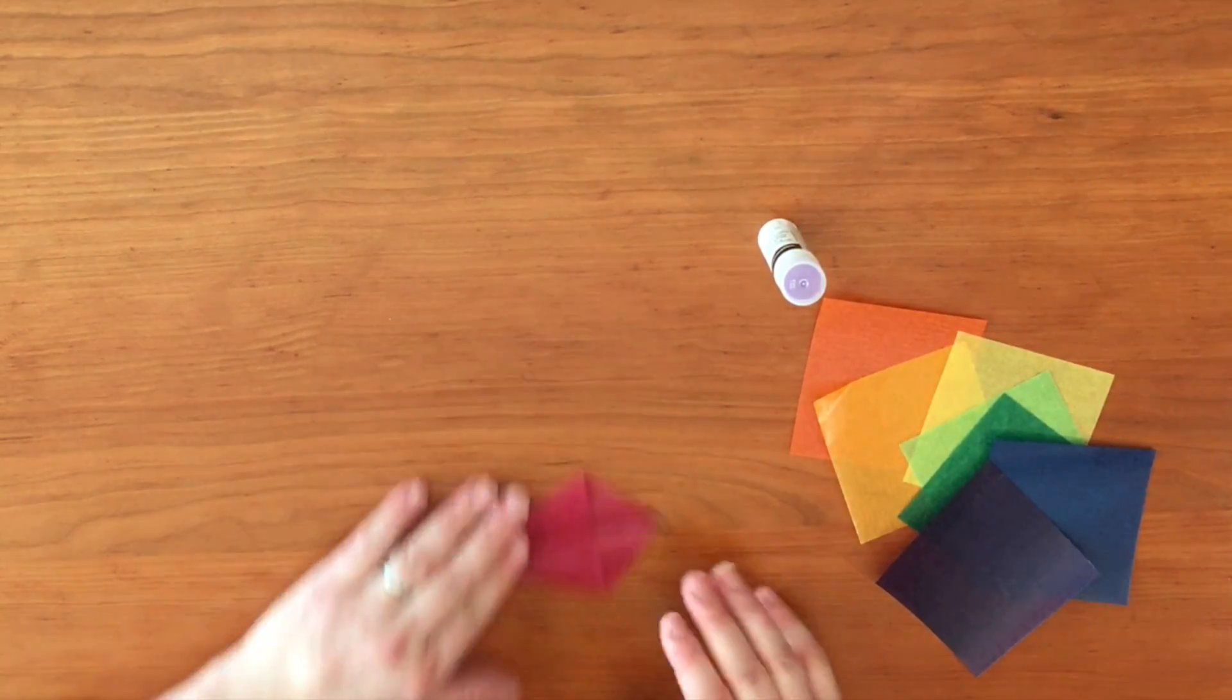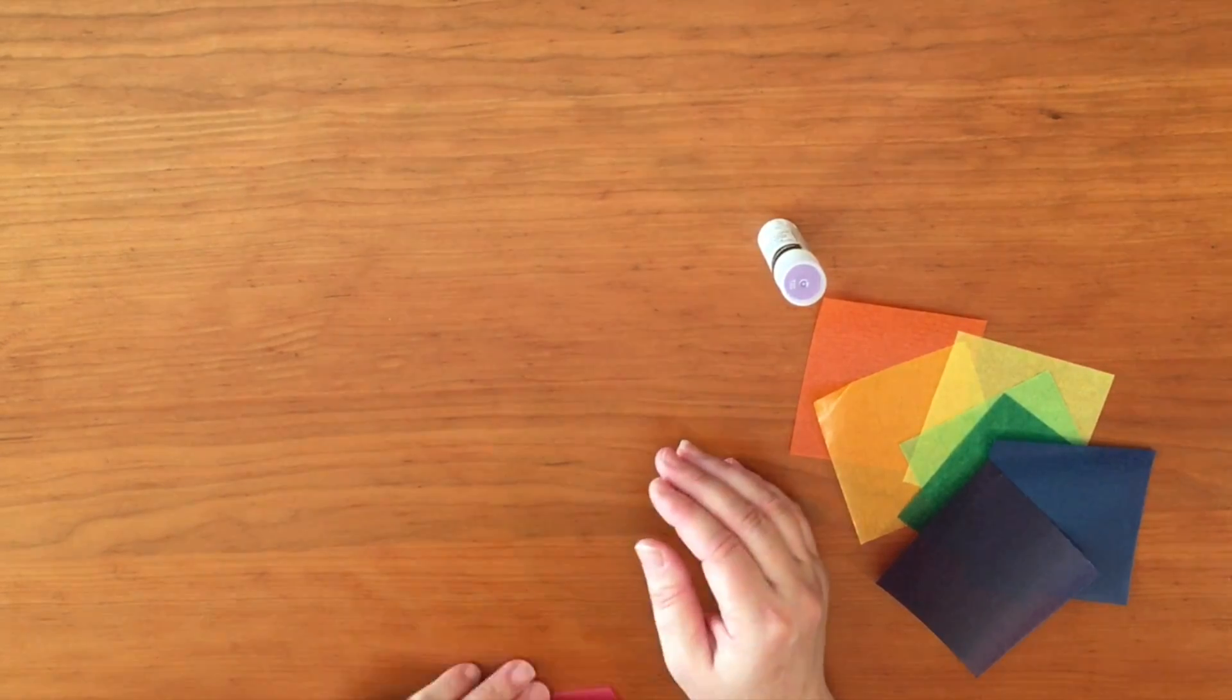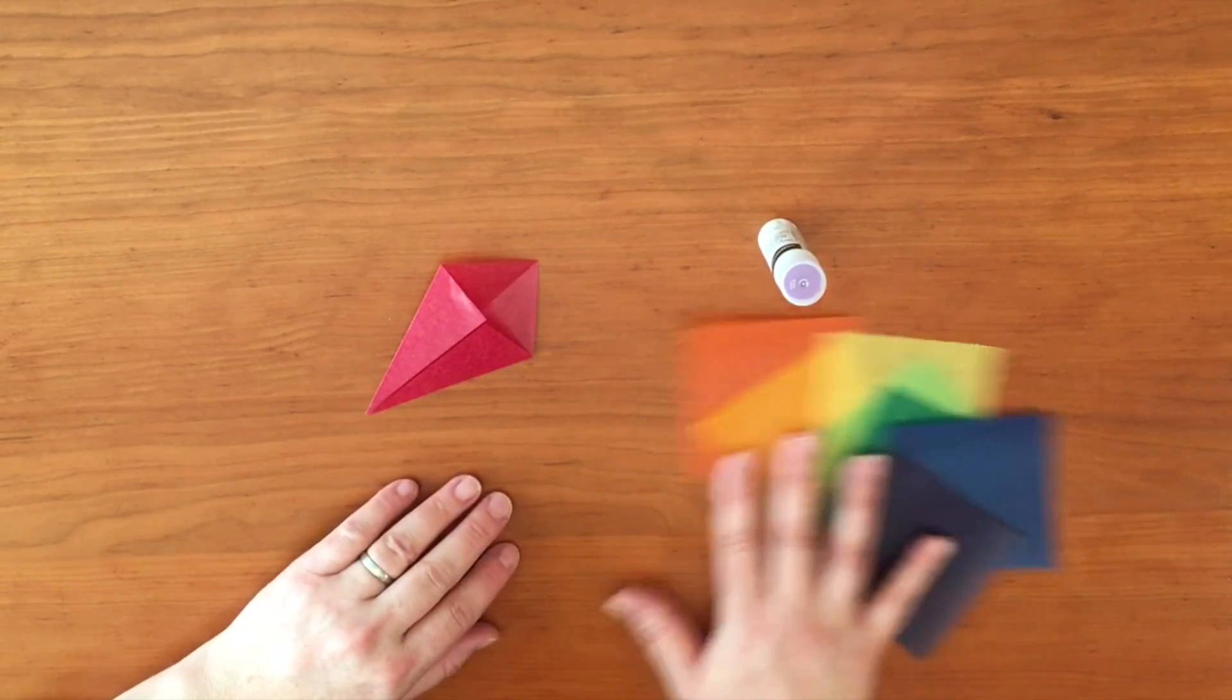Now we have a diamond shape like a kite. We're going to do the same thing to the other pieces of paper.